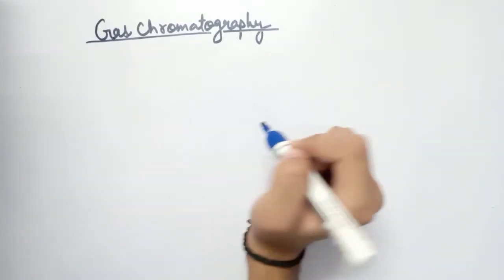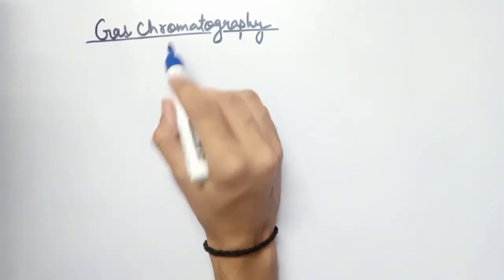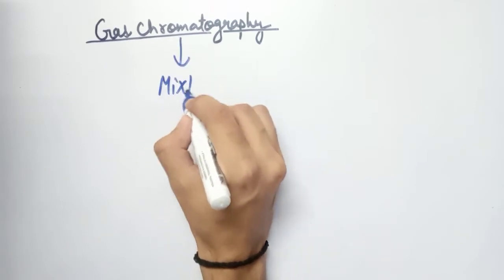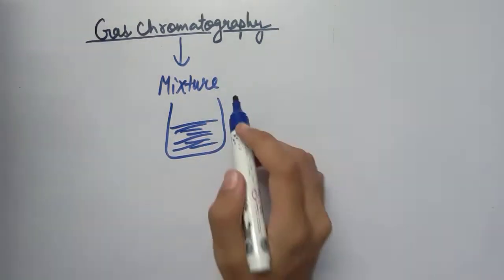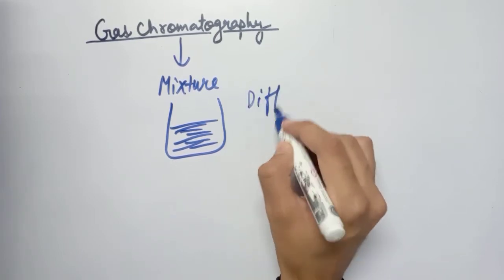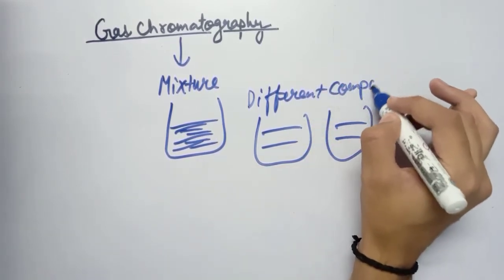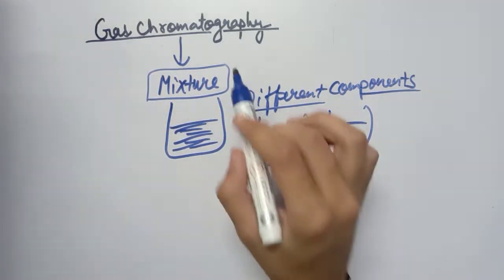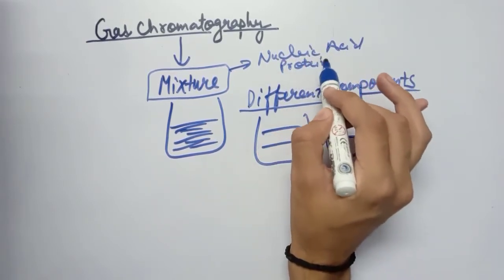Welcome back. Today we will study another type of chromatographic technique known as gas chromatography. In all chromatographic techniques, a mixture made up of two or more components is taken, and gas chromatography is used to separate different components from a mixture. This mixture can be nucleic acids or different proteins — it depends on the type of mixture you want to separate.